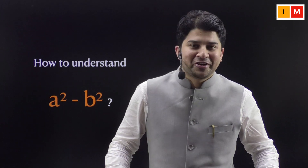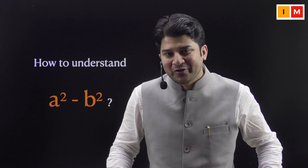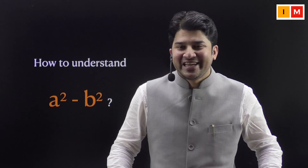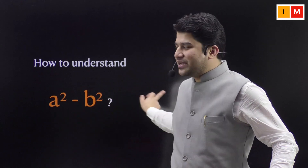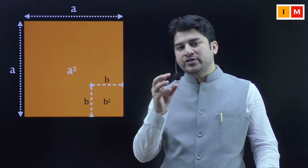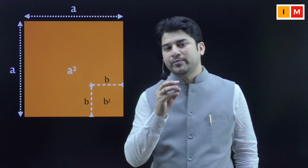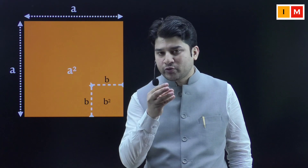Hello everyone, this is Infinity Maths and my name is Rehan Nawaz. Today in this video we are going to understand what is a² - b² visually. Let's begin with a square — if I ask you what is the area of this square, the dimension is a by a, so the area is going to be a². Now I am going to draw a smaller square in a corner with dimension b by b, so the area of the smaller square is b².